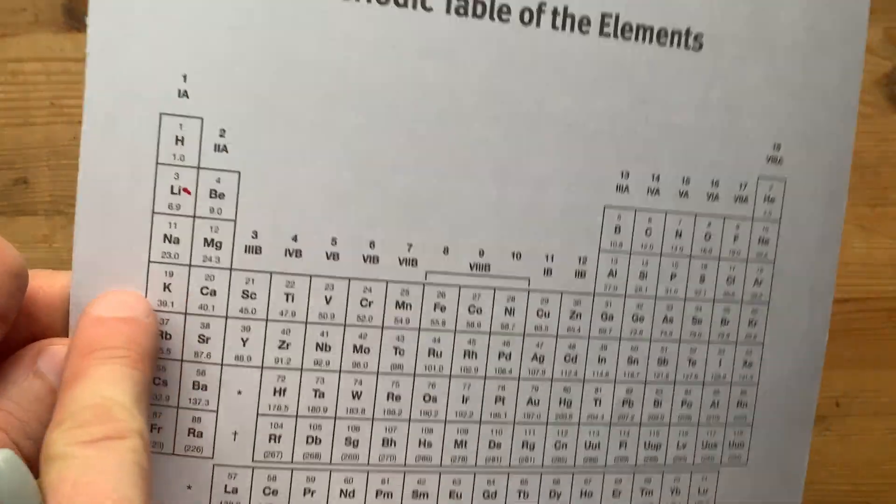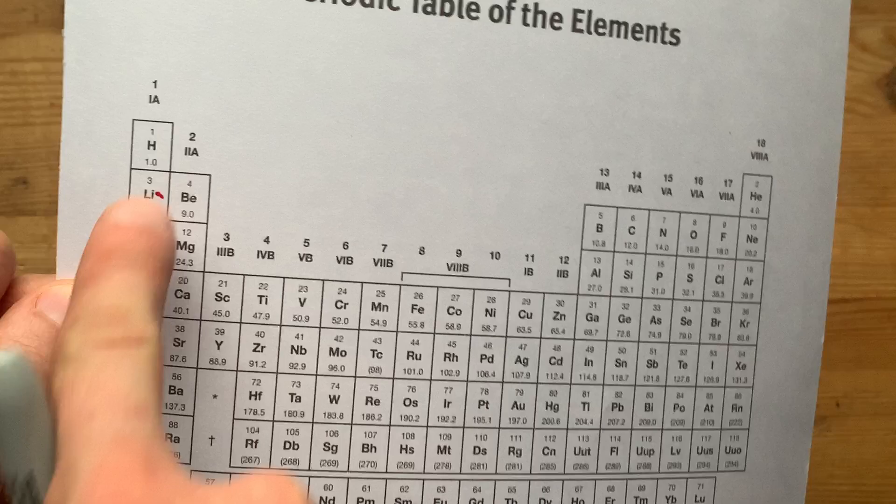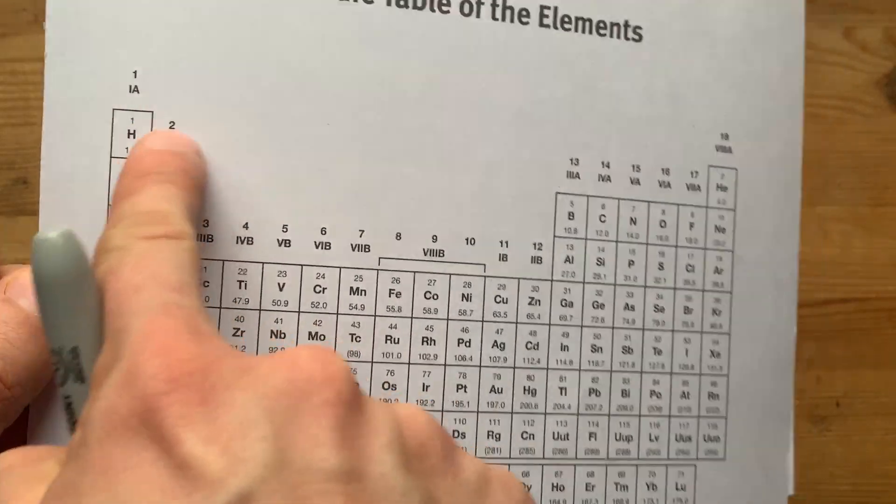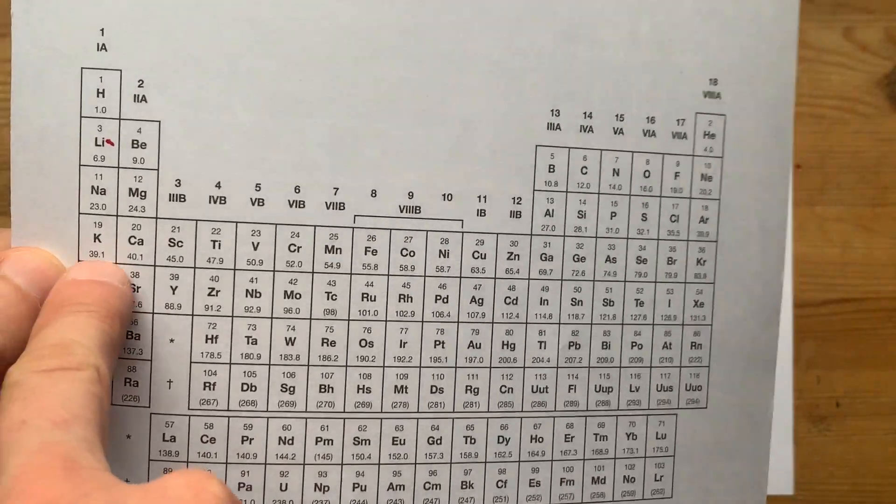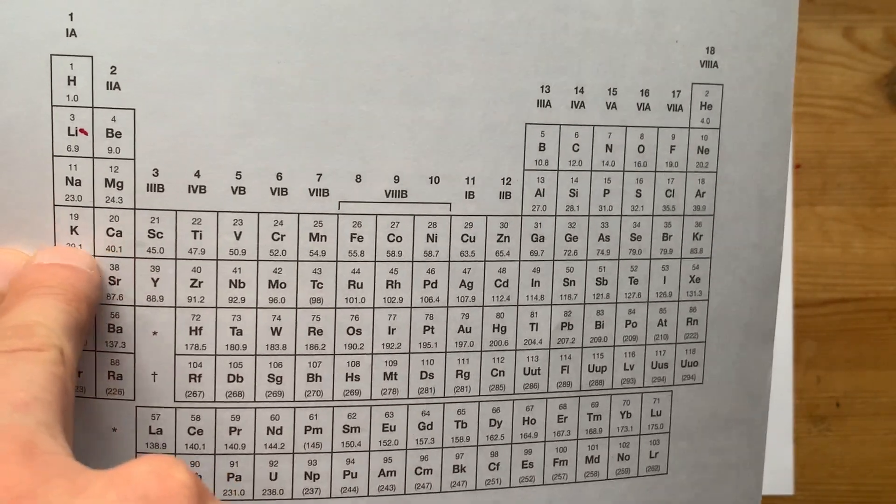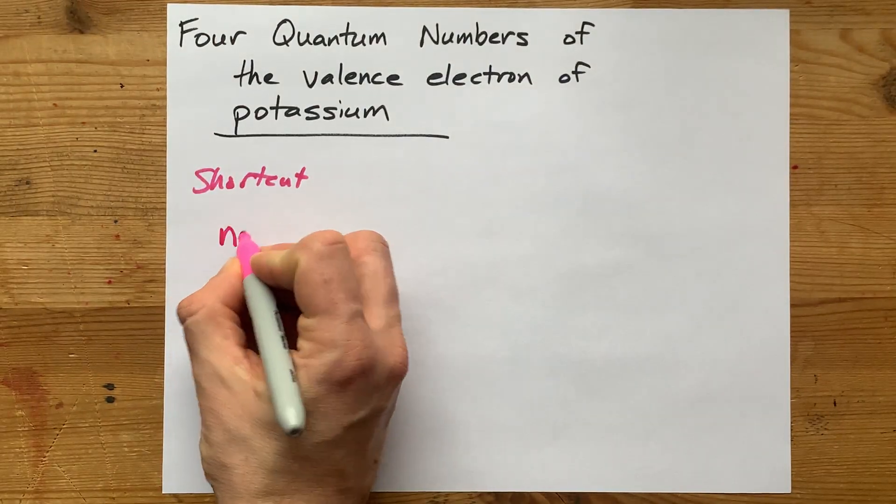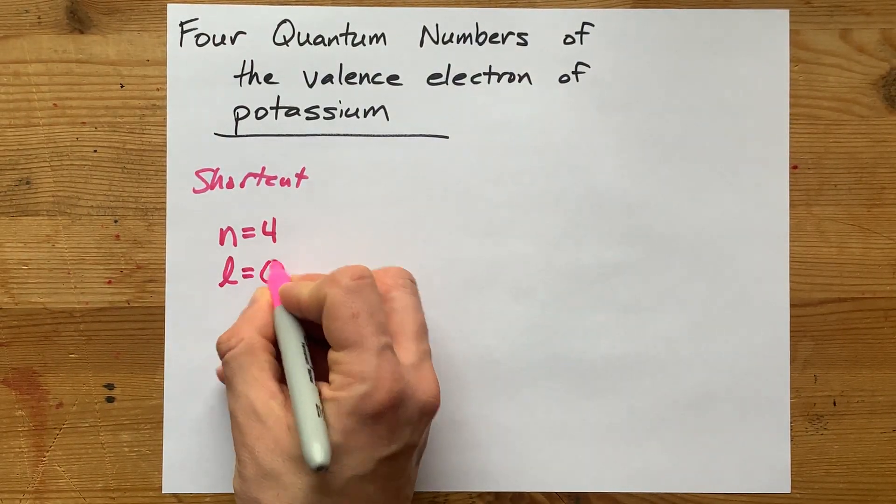First, potassium is in the fourth row, first column. This block here, the first two columns, is called the S block, and these elements in the fourth row happen to be N equals 4. So the quantum number is 4, and because it's the S block, we know L is 0.